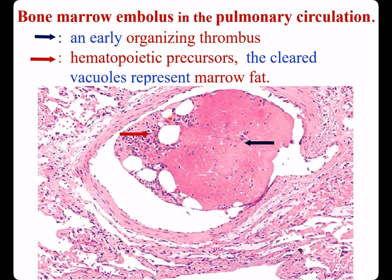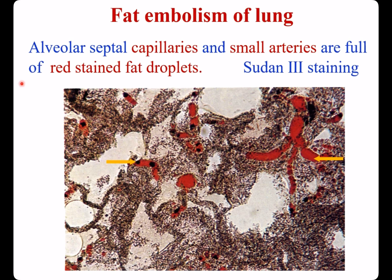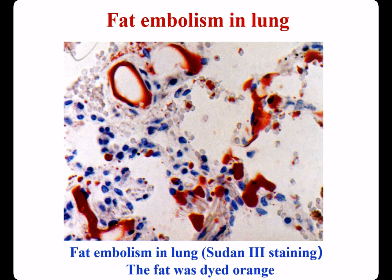Because of fracture of long bone, bone marrow enters the pulmonary circulation. In this vessel, there is early organization thrombosis; here are hematopoietic precursors; here is marrow fat with clear vacuoles. This is fat embolism of the lung — alveolar septal capillaries and small arteries are full of fat droplets stained red by Sudan staining in frozen section.